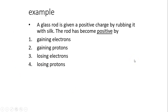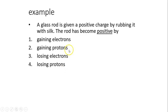A glass rod is given a positive charge by rubbing it with silk. How does it become positive? Can it gain electrons, gain protons, lose electrons, or lose protons? The key concept is only electrons can be removed. You cannot gain or lose protons. So to become positive, the rod must lose electrons.